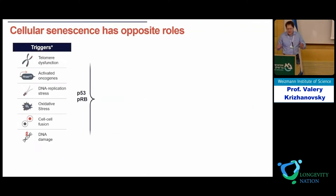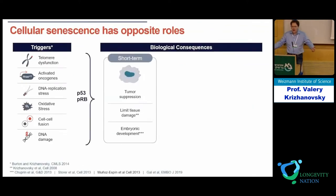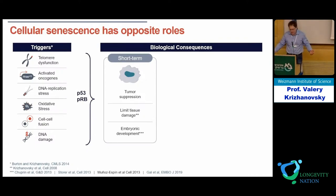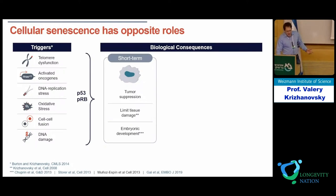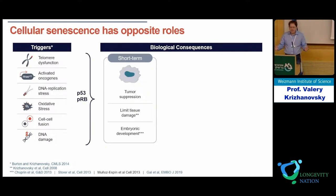So what are these senescent cells? Why are they formed? How is it possible that something that is damaging to the organism is formed naturally in the organism? The idea is that senescent cells are formed as a protective mechanism, mainly as a result of activation of oncogenes in response to DNA damage and all other types of cellular stress. And the short-term activation of senescent cells is protective in many ways.